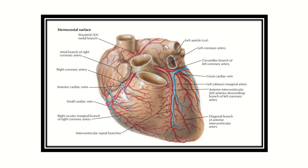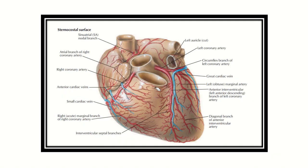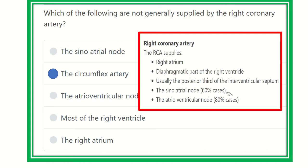The left coronary artery, after arising, supplies the left atrium, then all of the left ventricle except the part very close to the posterior interventricular groove (which is supplied by the right coronary artery), a smaller part of the right ventricle close to the anterior interventricular groove, and the anterior part of the interventricular septum just below the anterior interventricular groove — supplied by the anterior interventricular branch of the left coronary artery.